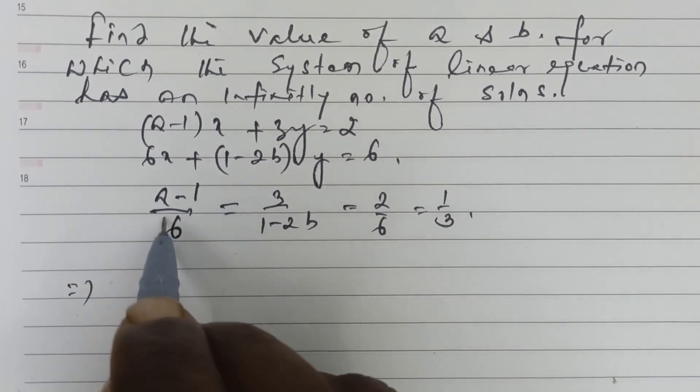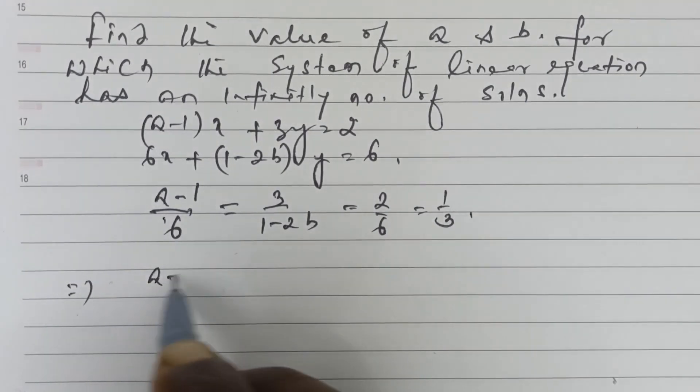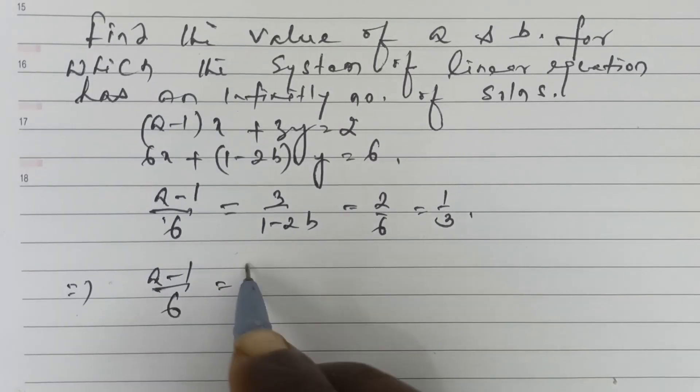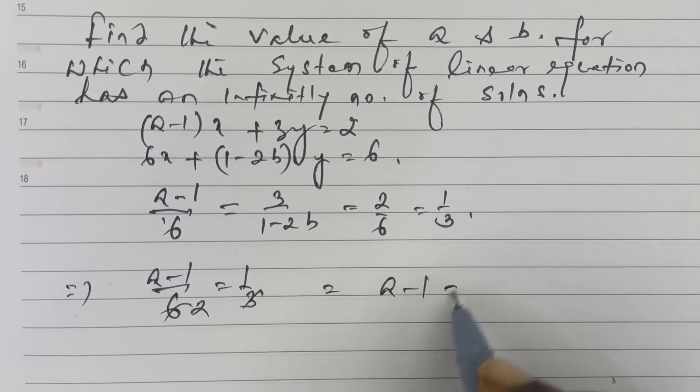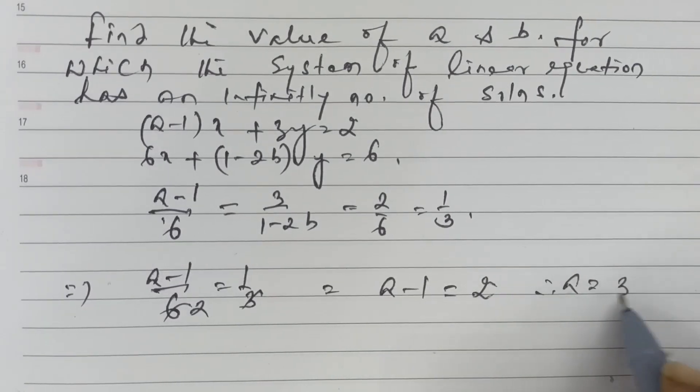Comparing first to third, (a-1)/6 = 1/3. So a-1 = 2, therefore a = 3.